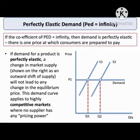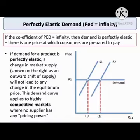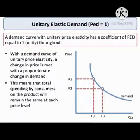Fourth is perfectly elastic demand. If the coefficient of Price Elasticity of Demand is infinity, then demand is perfectly elastic. There is one price at which consumers are prepared to pay. If demand for a product is perfectly elastic, a change in market supply will not lead to any change in the equilibrium price. This demand curve applies to highly competitive markets where no supplier has any pricing power.